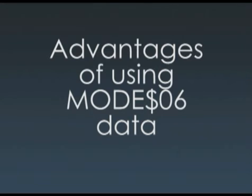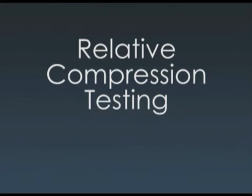Without Mode 6, we would have had to connect our scope to each cylinder and try to get it to act up, or guess at replacing all eight coils and hope the truck was repaired. The Mode 6 data made it a quick, clean, accurate diagnosis and a clean verification. The relative compression test with the scope only took a few minutes and ruled out the base engine as the cause of the misfire and more costly repairs.